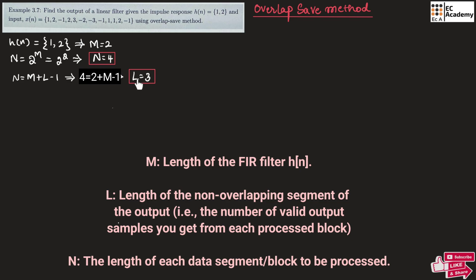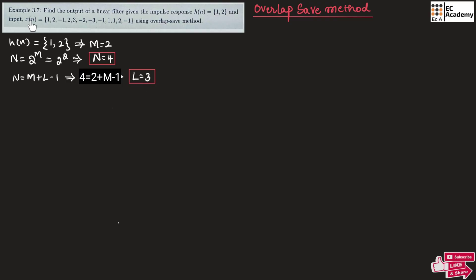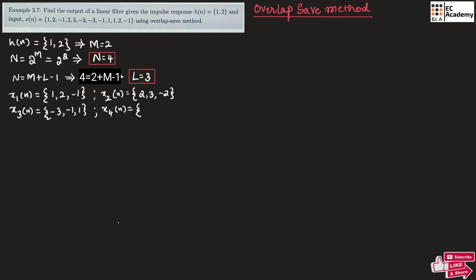The values of N and L are very important. Since L is equal to 3, from the input we take blocks of 3 values to make each sequence. We write x1(n) by taking the first 3 values of x(n): {1, 2, -1}. Similarly, x2(n) is the next 3 values: {2, 3, -2}. We find x3(n) with the next 3 values: {-3, -1, 1}. And x4(n) with the next 3 values: {1, 2, -1}.